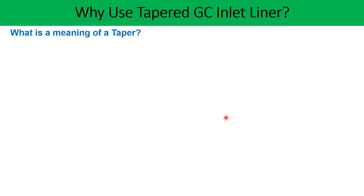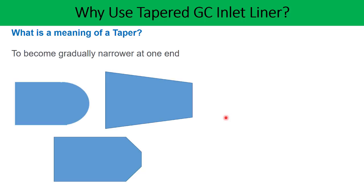So what is the meaning of a taper? To become gradually narrower toward one end. In these diagrams you can see one end has gradually become narrower — this is the geometry of a taper, or a taper geometry of objects.